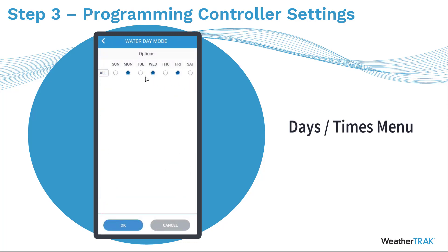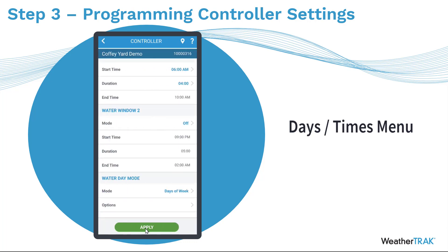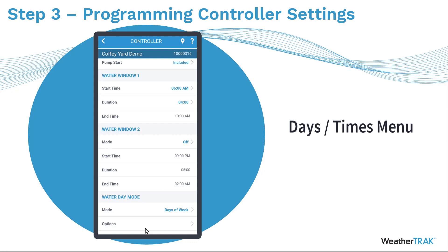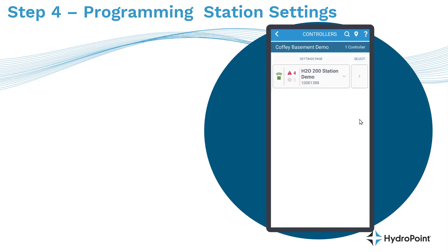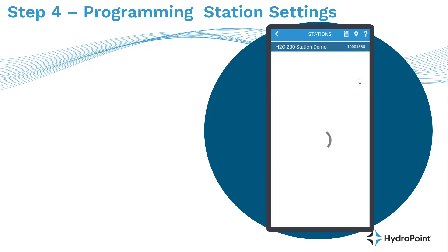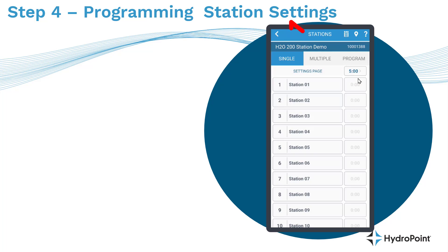As an installer, if you're not familiar with the local watering restrictions, it's best to program the controller with the start times and water windows from the controller you're replacing. Once you've accurately programmed all your controller settings, the next step is to program your station settings. Start at the Sites page, drill down to the Controllers page, and then drill down again to the Stations page.